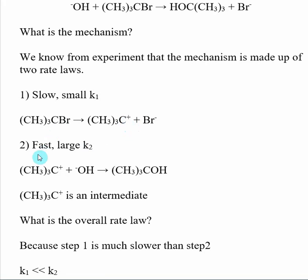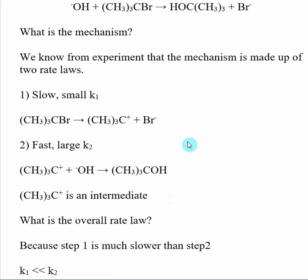Once we form this carbocation, the next step — where the hydroxide comes in and reacts with the carbocation to form a carbon-oxygen bond — happens very fast, because we're going from a very unstable state to a more stable state. This gives us the idea of an intermediate: a species that shows up inside the mechanism but is not part of the overall reaction. The carbocation is made and used up within the mechanism, so it is called an intermediate.